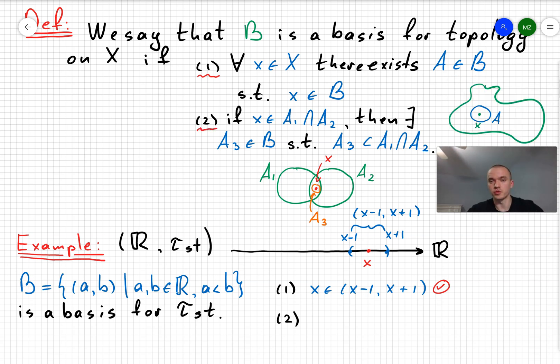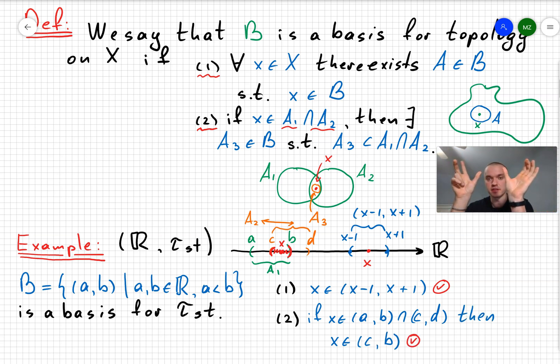To show the second assumption, we need to take some two elements of our basis. Then those two open intervals are going to either intersect or not. If they're going to intersect, then you can see that intersection of (a,b) and (c,d) is going to be an open interval (c,b).